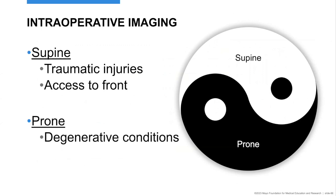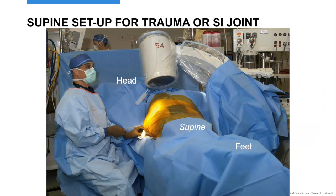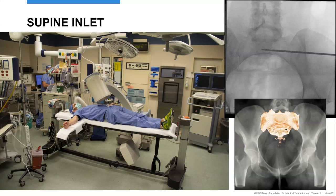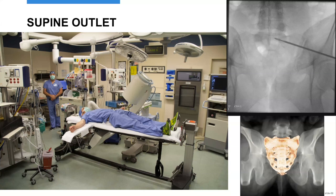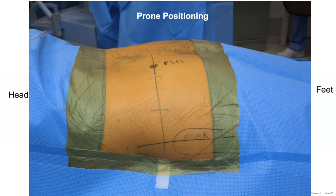Intraoperatively, for trauma I do them supine — so I have access to the symphysis in the front, which can indirectly reduce the back. For degenerative conditions, I do them prone, often combining with long segment spine fusions. Prone is so much easier for draping. For the inlet view when supine, your beam's coming down overlying S1 on S2 — that's how you get your view looking right down that column. The outlet view is for cranial-caudal adjustments — you can see S1, the neural tunnel, and your pathway.